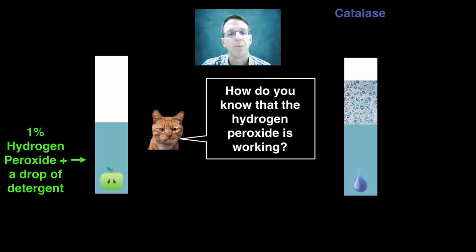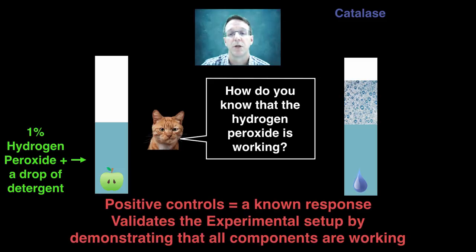And this is called a positive control since it's designed to produce a known response. In this case, the production of bubbles in the hydrogen peroxide solution. This is used to validate the experimental procedure, often by demonstrating that all the components of a particular experiment are working properly.